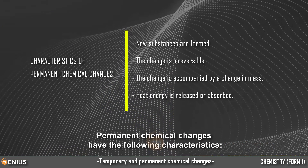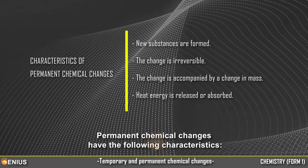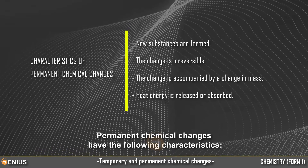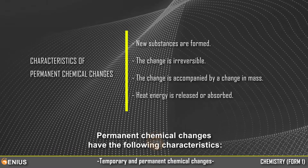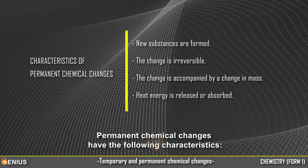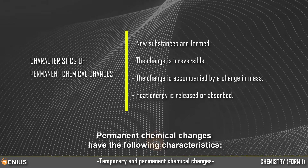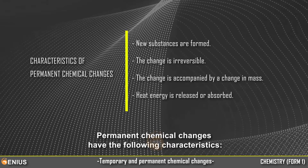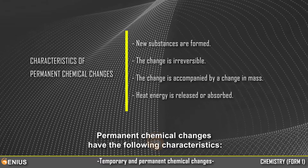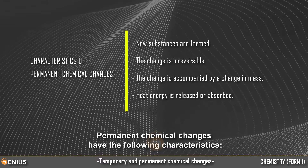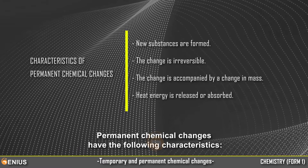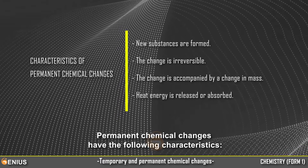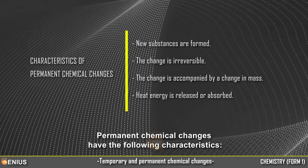Permanent chemical changes have the following characteristics: new substances are formed, the change is irreversible, the change is accompanied by a change in mass, and heat energy is released or absorbed.